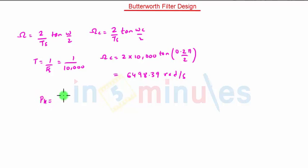So PK equals plus minus ωC e raised to j(N plus 2K plus 1)π by 2N. Here K ranges from 0 to N minus 1. Here N equals 2, so it will range from 0 and 1.